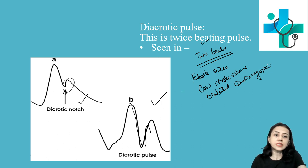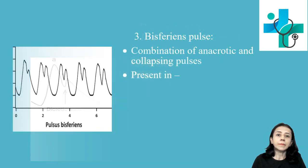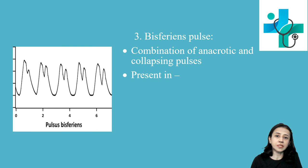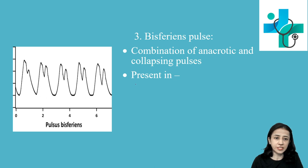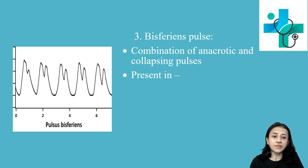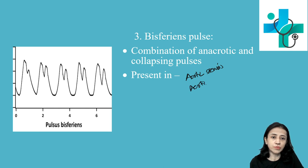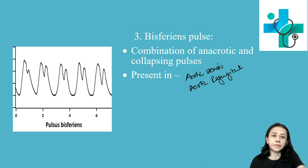Next is bisferiens pulse. This is a combination of anacrotic and collapsing varieties. Both features are found in bisferiens pulse, and it is present in conditions where there is both aortic stenosis and aortic regurgitation.